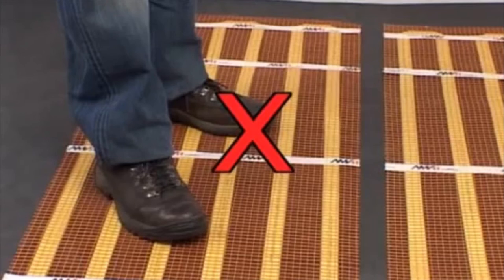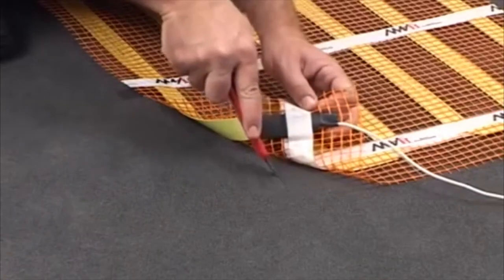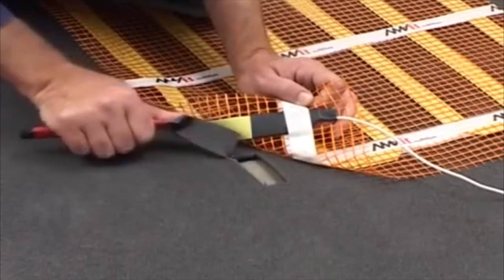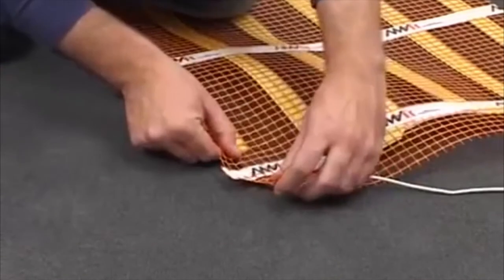If possible, avoid standing on the mats. Create a slight groove in the insulation material to accommodate the slightly thicker lead connector and to help the mat lie flat.